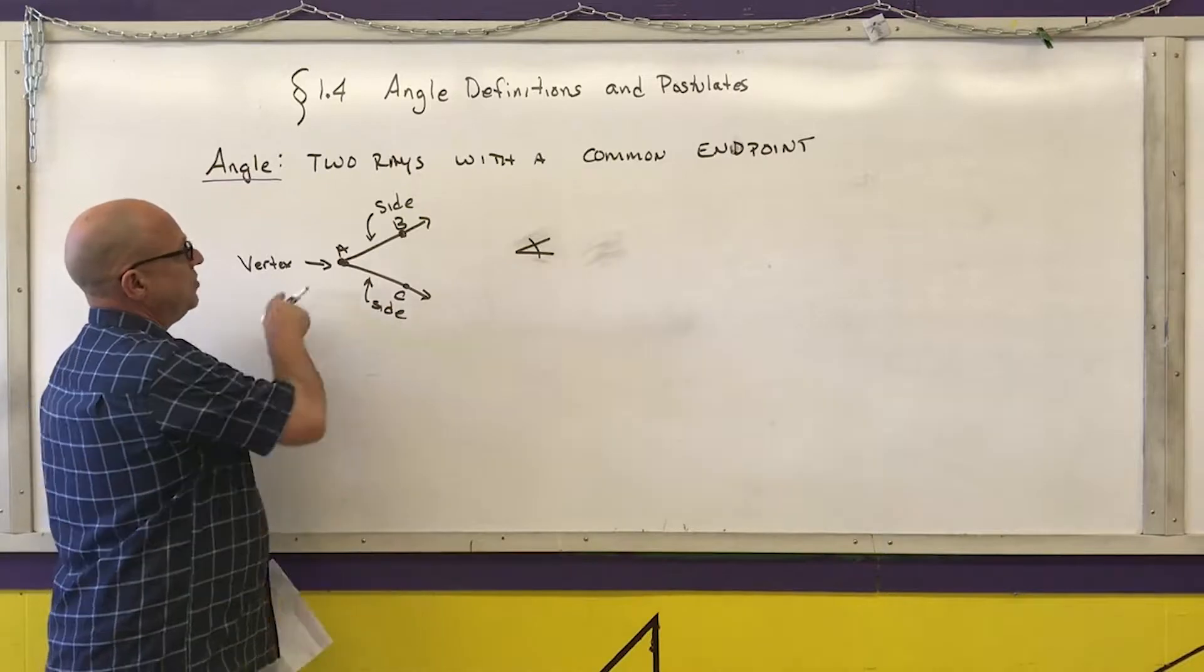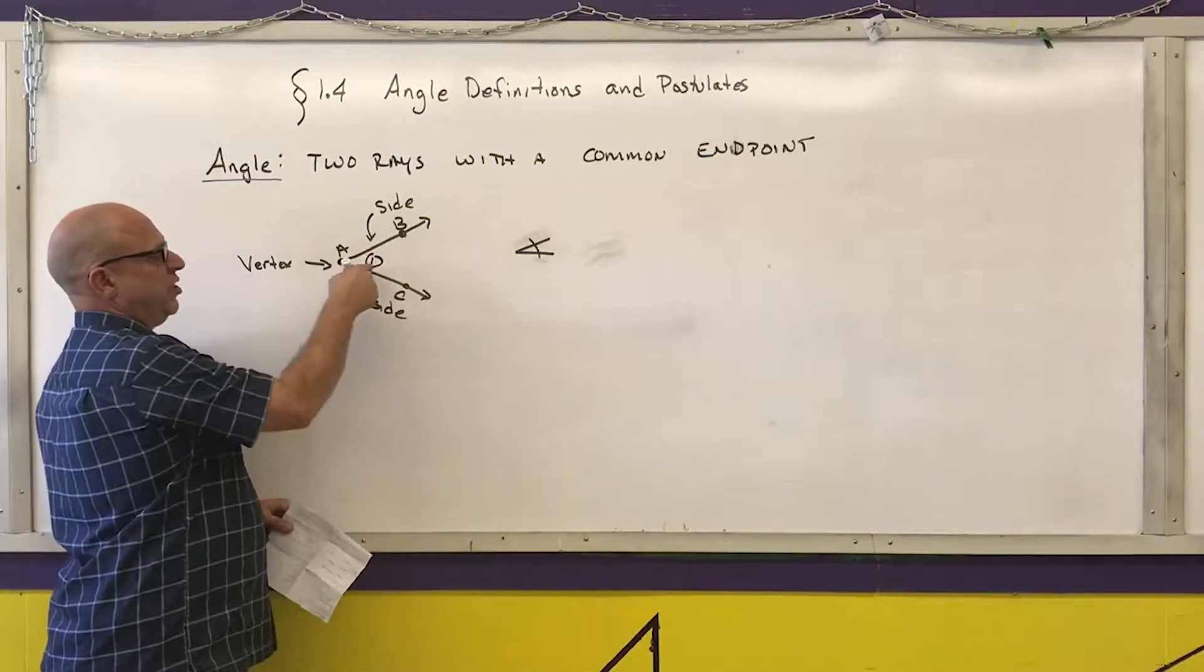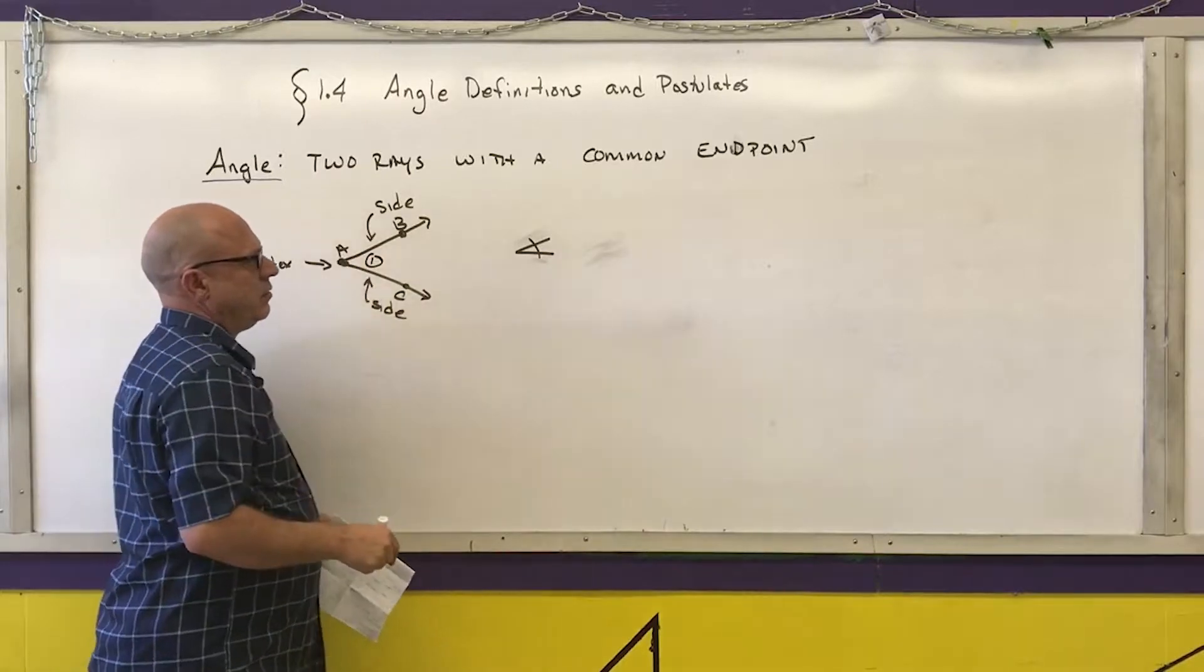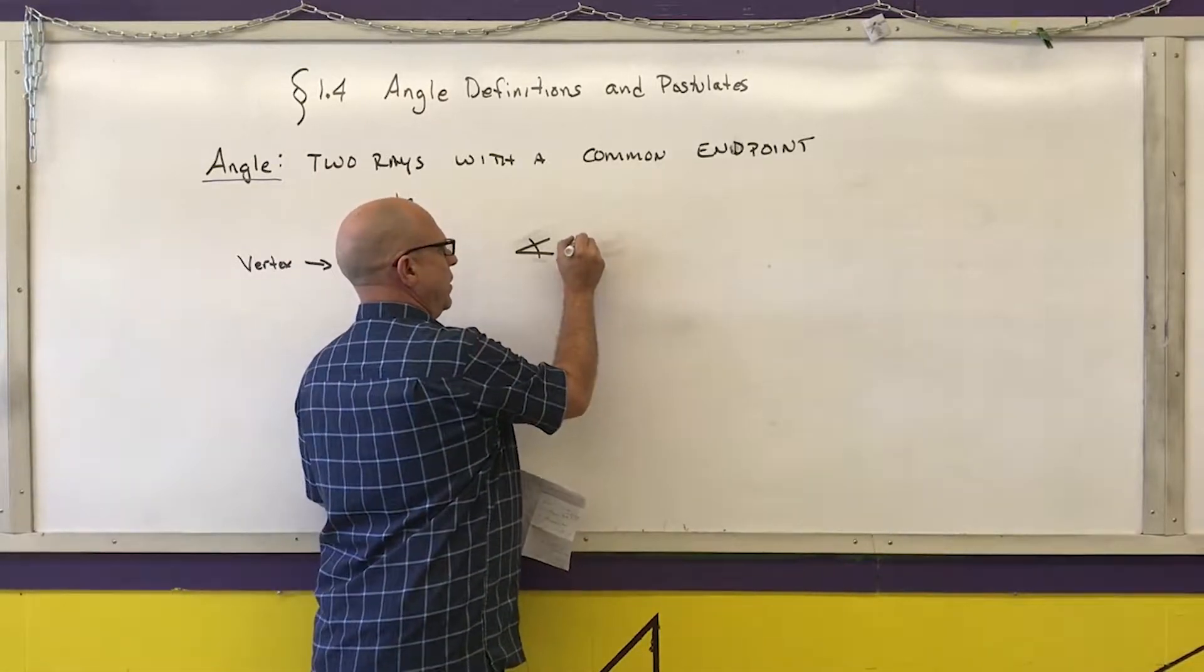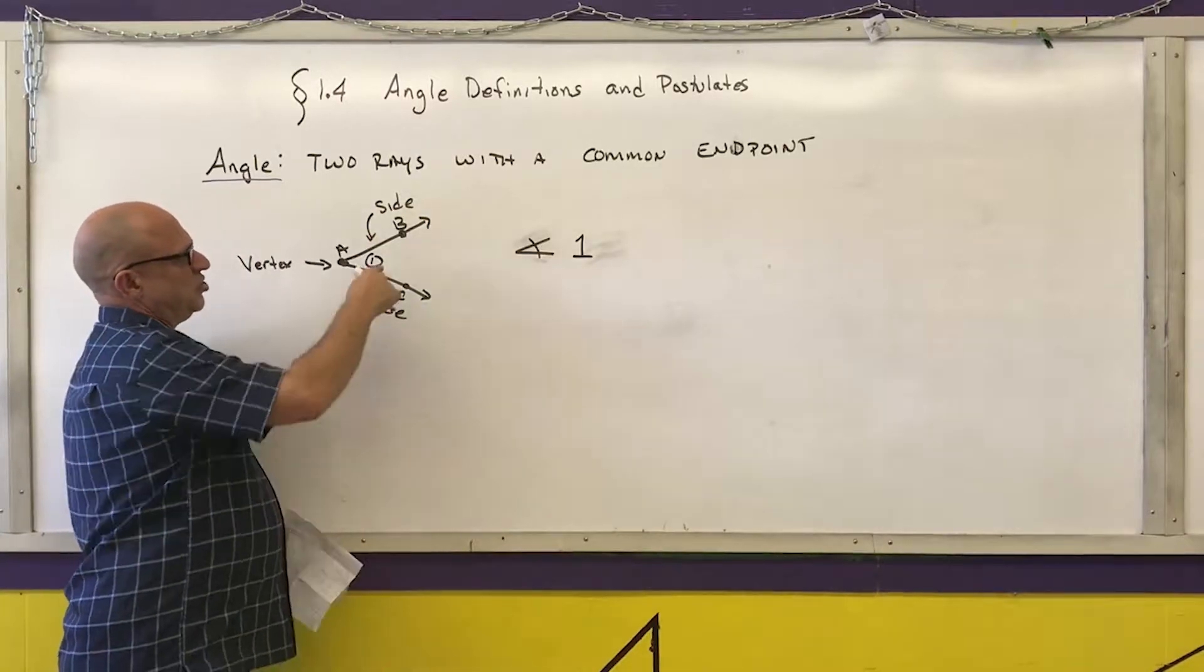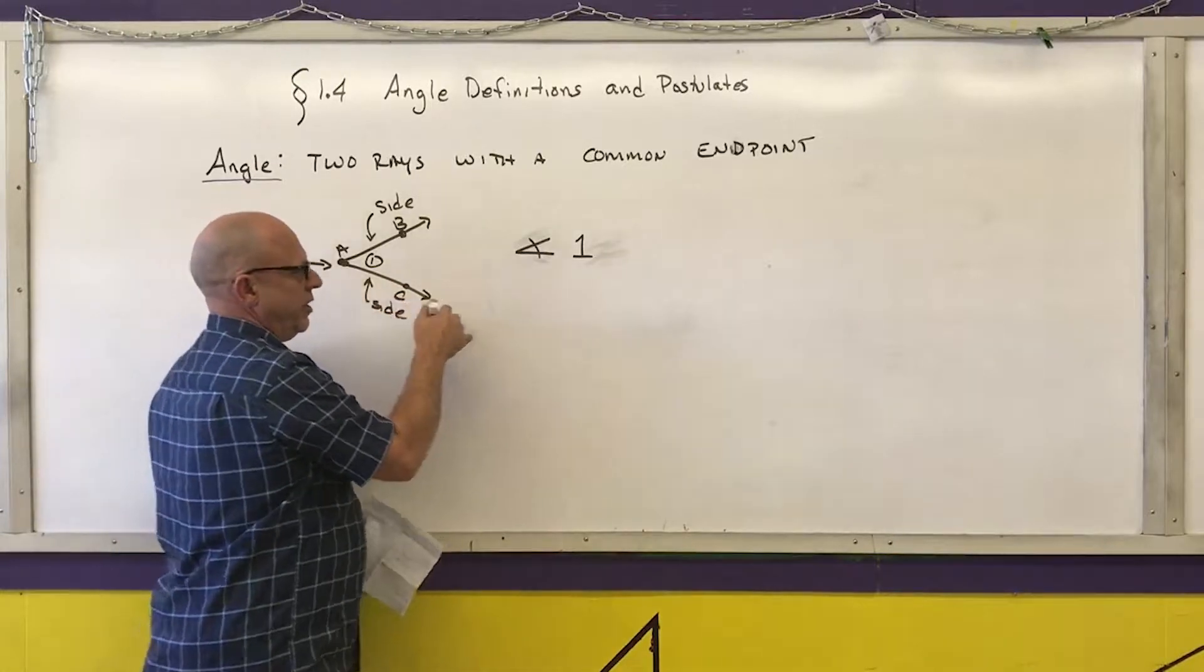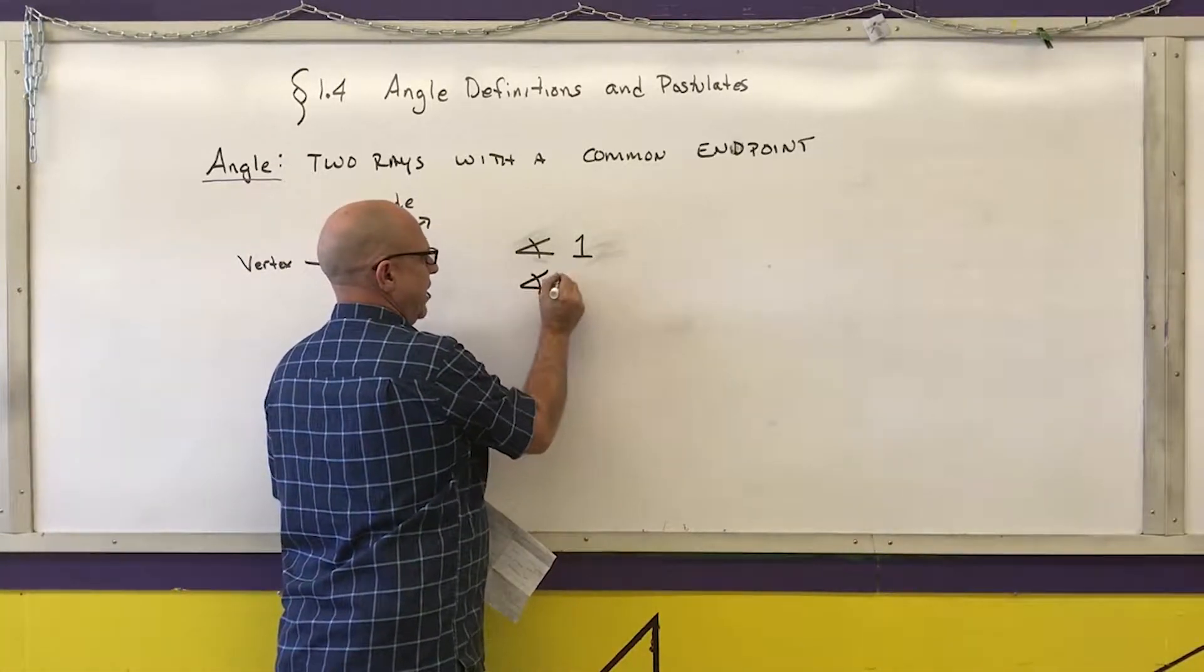There are four different ways that I can name this angle. Sometimes you'll see a little number inside of an angle, so I can call this angle 1. Another way to name it is you start at one of the rays, common endpoint, and then go to the other ray. So I can call this angle BAC.